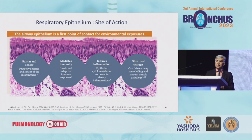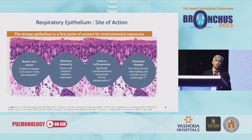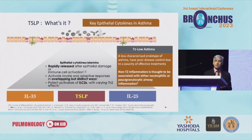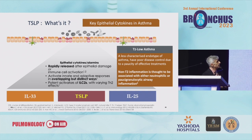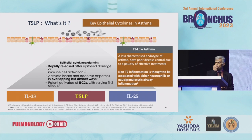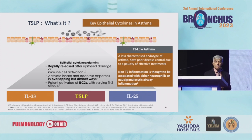The respiratory epithelium, whenever it gets hurt, releases an epithelial cytokine — TSLP — which is common for T2 high as well as T2 low asthma. This cytokine is responsible not only for repair and immunity of the epithelium, but also for destruction and damage. It is one of the main cytokines orchestrating T2 low asthma and can be neutralized by a monoclonal antibody against it.